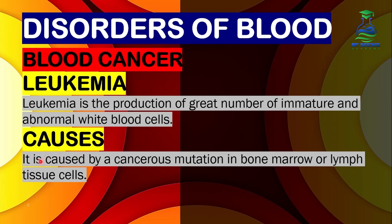What are the causes of leukemia? It is caused by a cancerous mutation in bone marrow and lymph tissue cells. This is because bone marrow and lymph tissue cells are the places where white blood cells are produced.